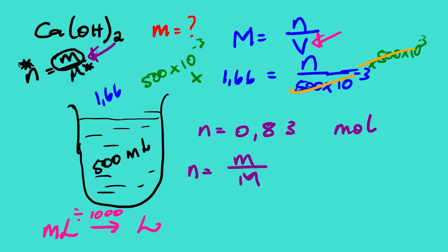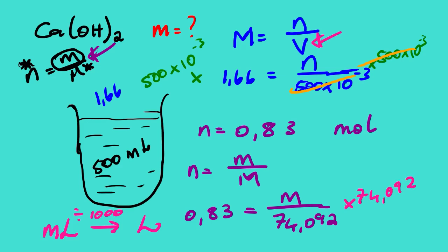Using n = m/M, we substitute n = 0.83 and the molar mass of calcium hydroxide is 74.092 g/mol. Multiplying both sides by 74.092, we get a mass of 61.496 grams of calcium hydroxide needed.